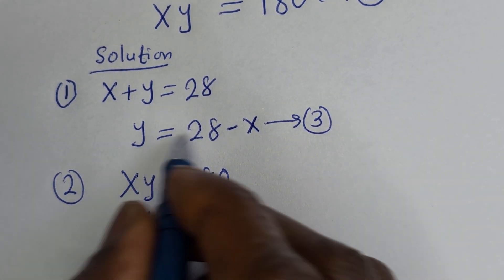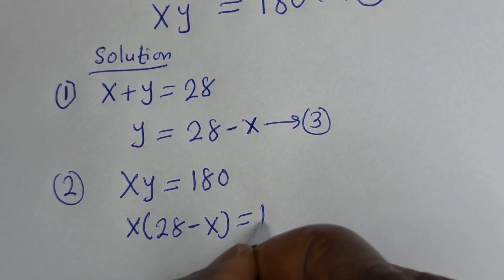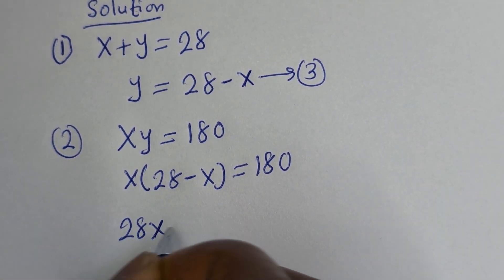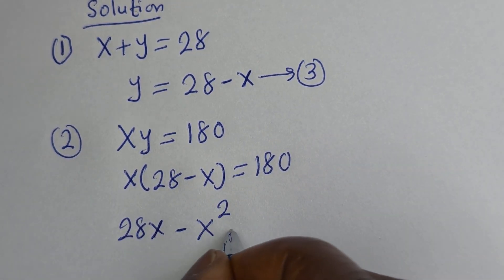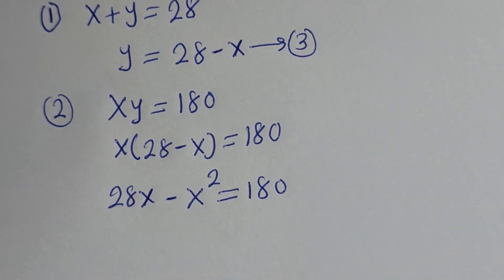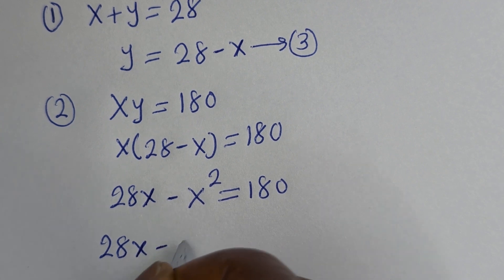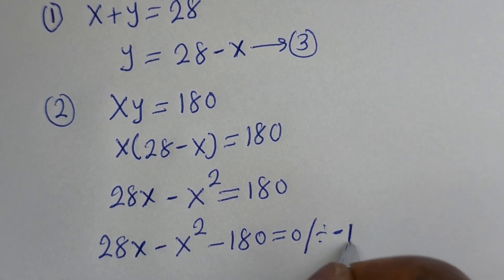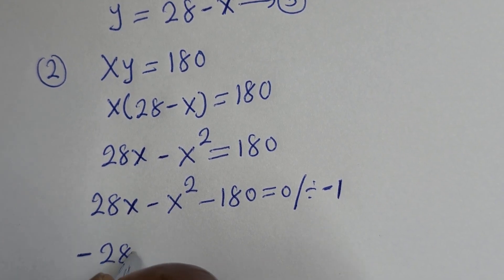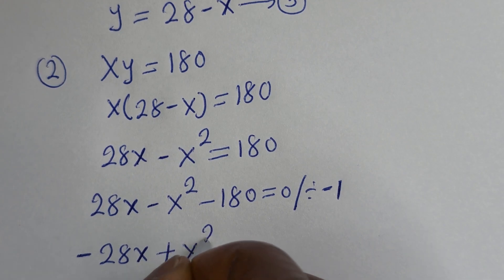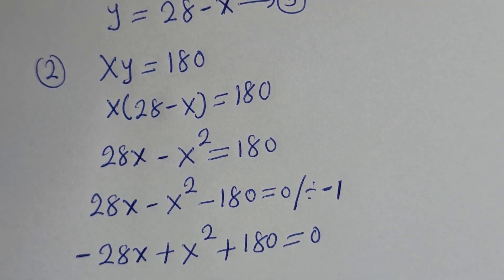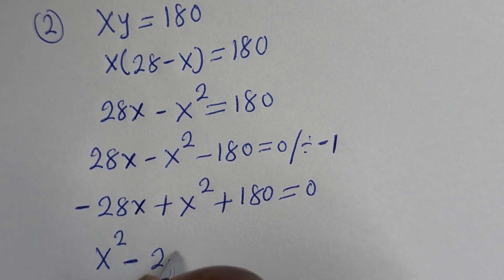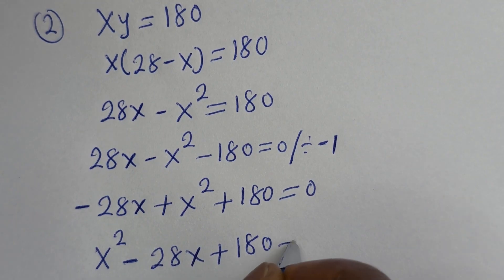Then substituting equation 3: S times (28 minus S) is equal to 180. Let's open the bracket: S multiplied by 28 minus S squared is equal to 180. Then we have 28S minus S squared plus 180 is equal to 0. Putting this in standard form, we have S squared minus 28S plus 180 is equal to 0.